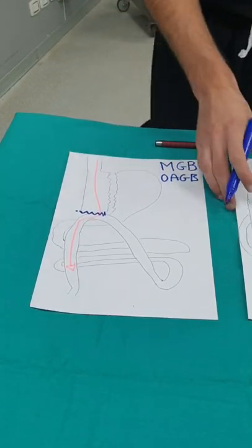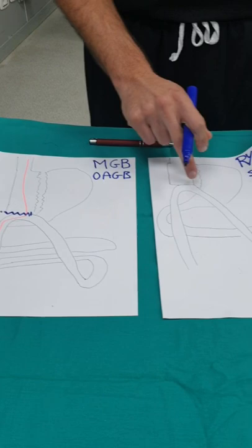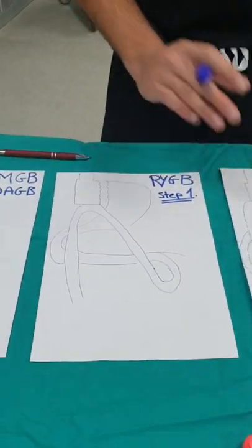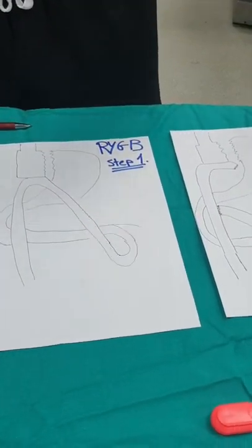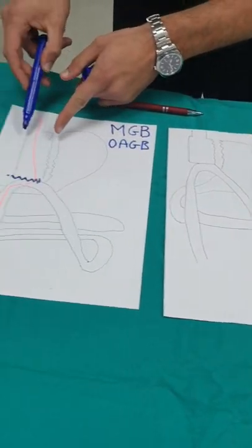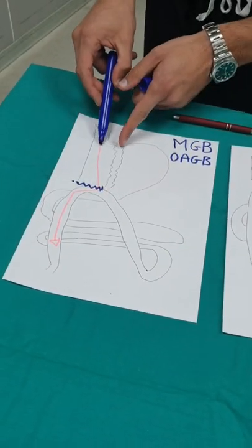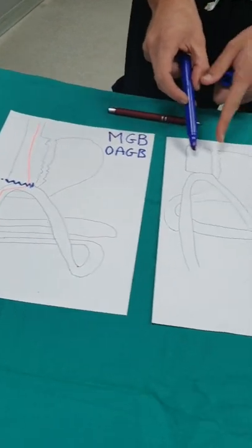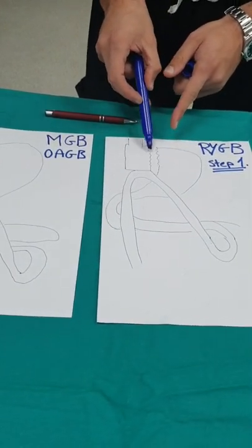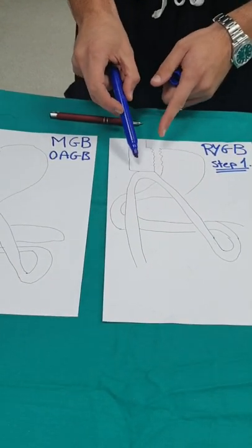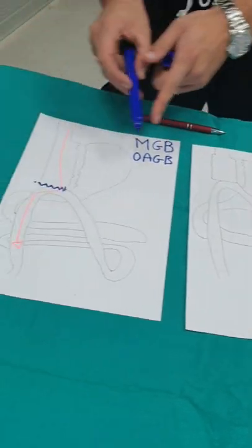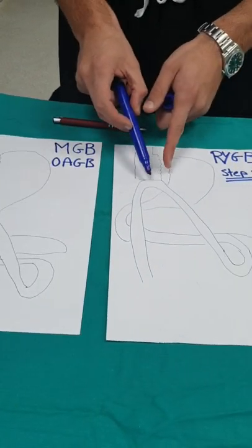Compare this to the Roux-en-Y gastric bypass here. Remember Roux-en-Y has been around for quite a while. When you look at here, look how big when you separate the stomach, it's sort of long. Here with Roux-en-Y, we make it short and narrow. So compare this to this. As you can see, this is shorter.